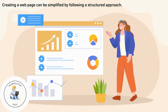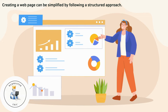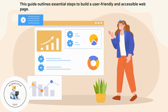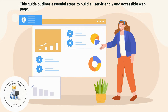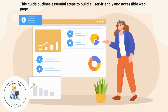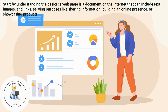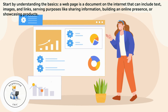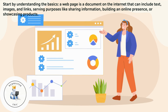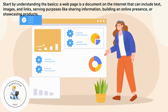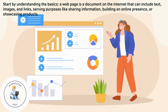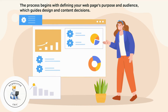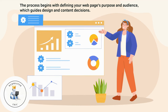Creating a web page can be simplified by following a structured approach. This guide outlines essential steps to build a user-friendly and accessible web page. Start by understanding the basics. A web page is a document on the internet that can include text, images, and links, serving purposes like sharing information, building an online presence, or showcasing products. The process begins with defining your web page's purpose and audience.